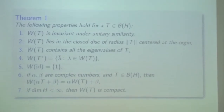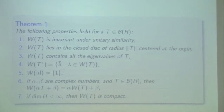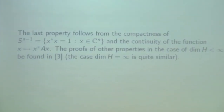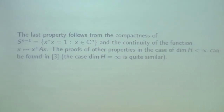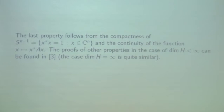For us, the most important thing is property number 5 and point number 3. The last property follows from compactness and will continue to the appropriate function. The proofs of these properties can be found in classical literature — we will apply Horn and Johnson in the case of matrices, with the case of finite-dimensional space H being quite similar.